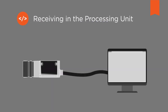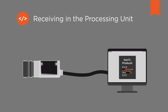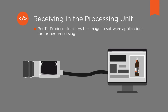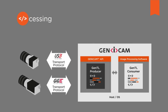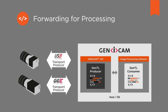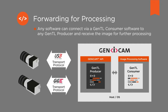After the image has been received in the computer, a piece of software called GenTL Producer transfers the image to software applications for further processing. Any processing software can connect via a piece of software called GenTL Consumer to any GenTL Producer and receive the image for further processing.